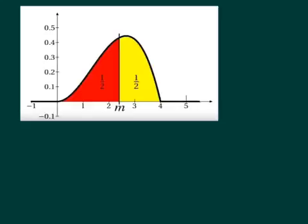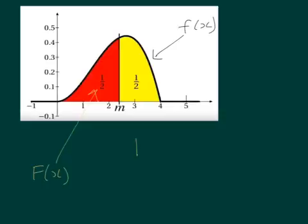The equation of this line — the probability density function — is given by lowercase f of x, and the value of the area is given by uppercase F of x. So what we're looking to find is a particular value m such that capital F of m equals a half. Capital F of m is the probability that x is less than or equal to this value.